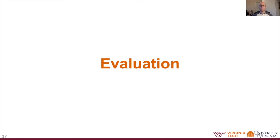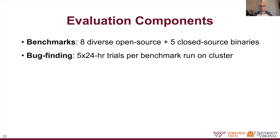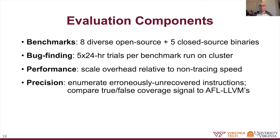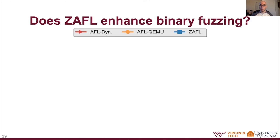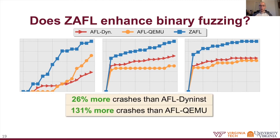For our evaluation, we selected eight diverse open source and five closed source binaries as fuzzing benchmarks. Our bug-finding evaluations consisted of five 24-hour trials per benchmark, and in performance evaluations we scaled overhead relative to non-tracing speed. For precision experiments, we enumerated erroneously unrecovered instructions and compared true and false coverage signal to compiler fuzzing instrumentation. In evaluating whether Zaful enhances binary fuzzing effectiveness, compared to state-of-the-art static rewriting-based AFL Dyninst and dynamic translation-based AFL QEMU, Zaful helped expose 26% and 131% more unique triaged crashes respectively.